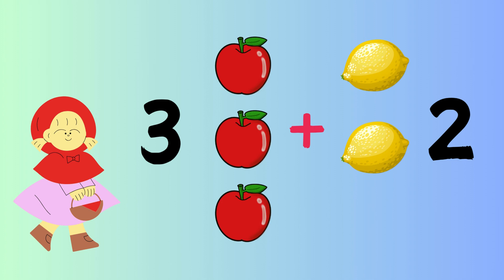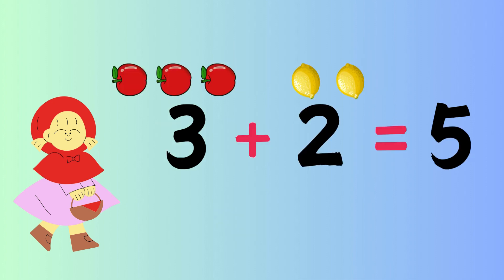So remember, addition is combining numbers together to find the result. The symbol used to show addition is the plus. In her basket she has 3 apples plus 2 lemons, so the result is 5. 3 plus 2 is equal to 5.